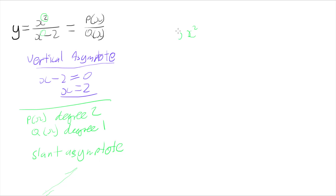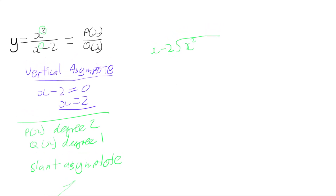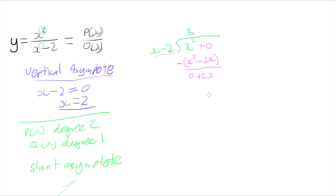I've got x squared divided by x minus 2, and I'm going to use the long division method. I just focus on the two highest terms. How many times does x go into x squared? x times x gives me x squared, so it goes in x times. Then I multiply: x times x is x squared, and x times negative 2 is negative 2x. Subtracting that off — x squared minus x squared gives 0, and 0 minus negative 2x is 2x. So my remainder is plus 2x.